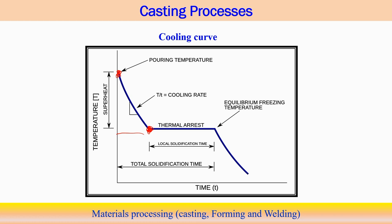Some superheat temperature is required because it takes some time before solidification begins, during which the liquid metal is carried from one place to another. The slope of the cooling curve from the pouring temperature to the solidification start temperature represents the cooling rate at any given point. A steeper slope indicates a higher cooling rate during this cooling process.